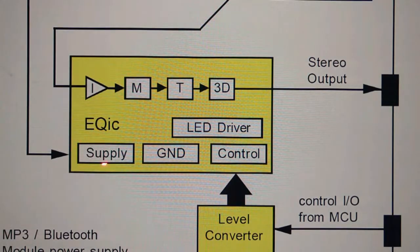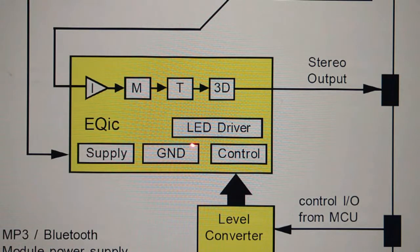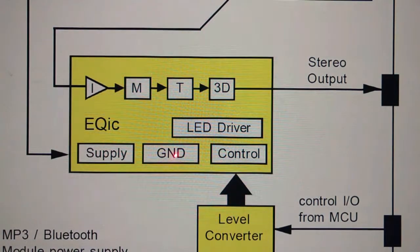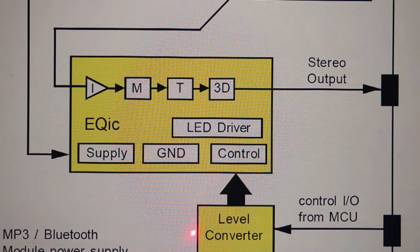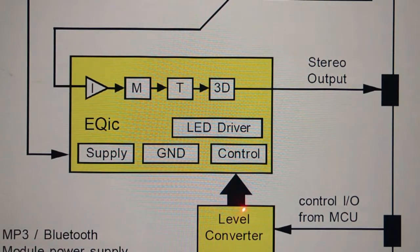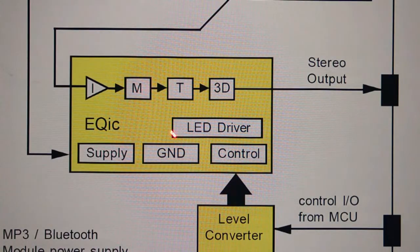Internally we also have the supply and ground for the EQIC — this is not a hybrid grounding system; it is basically just an analog ground. The control here is accessed by the level converter, and this control covers mode control, turbo bass control, and 3D sound control.